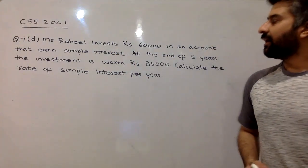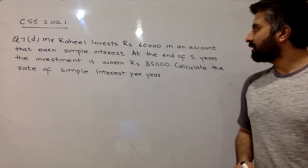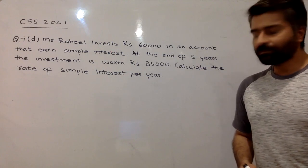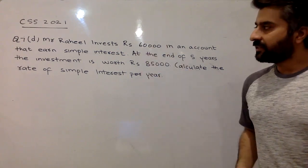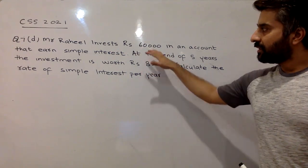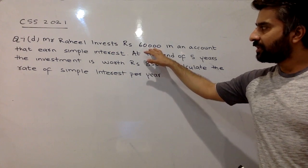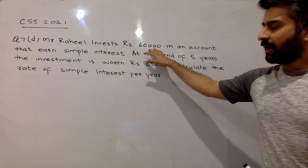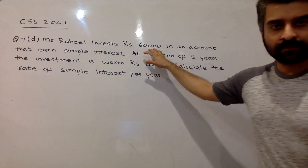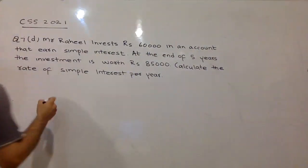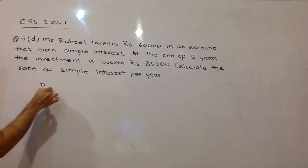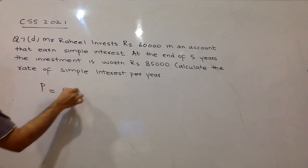Mr. Rahi invests Rs. 60,000 in an account. So, we have to take out data. This Rs. 60,000 is investment. We call this principal amount. So, let us write principal amount P, that is Rs. 60,000.